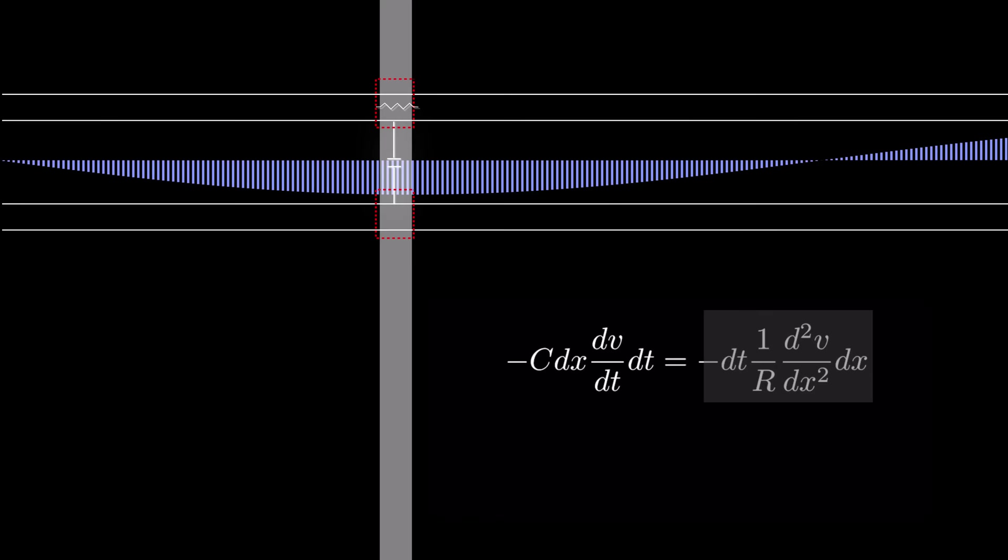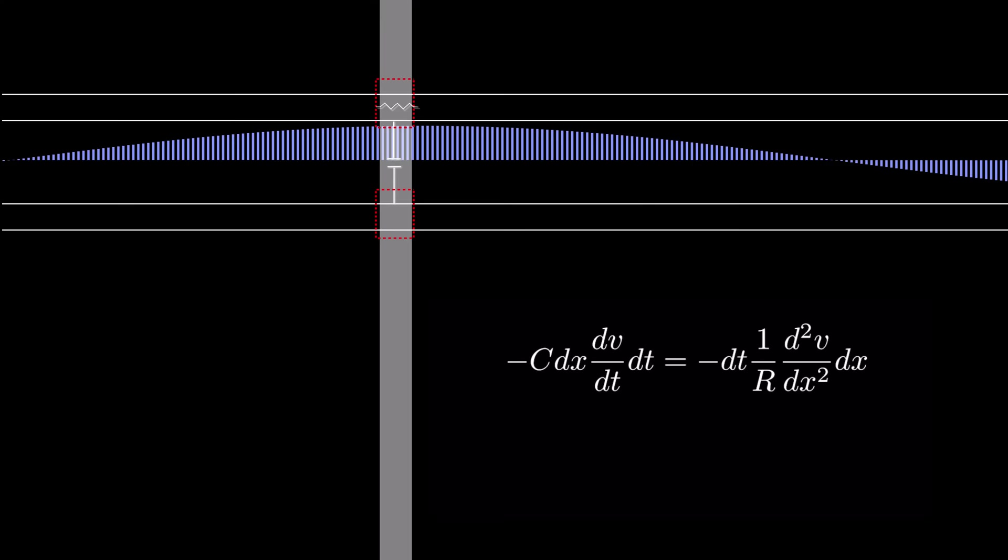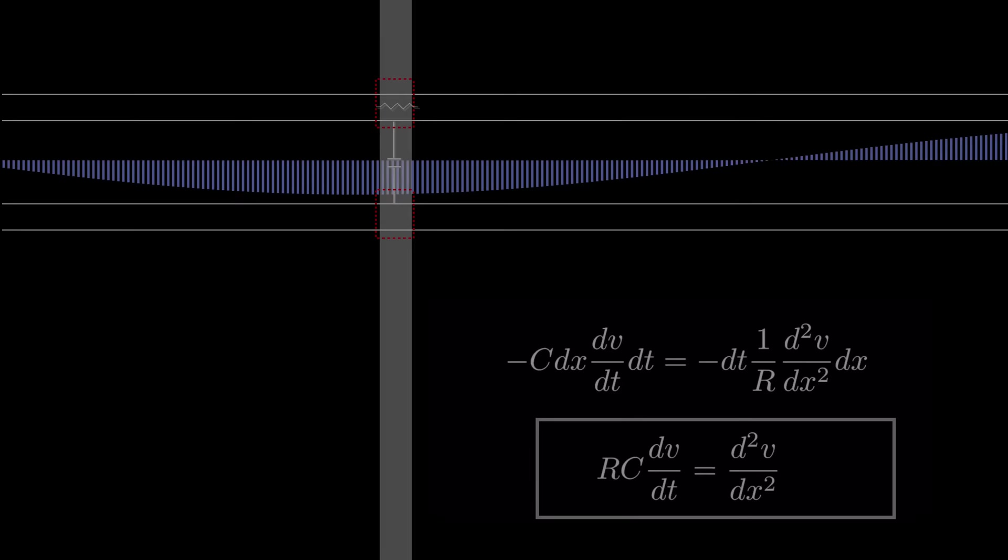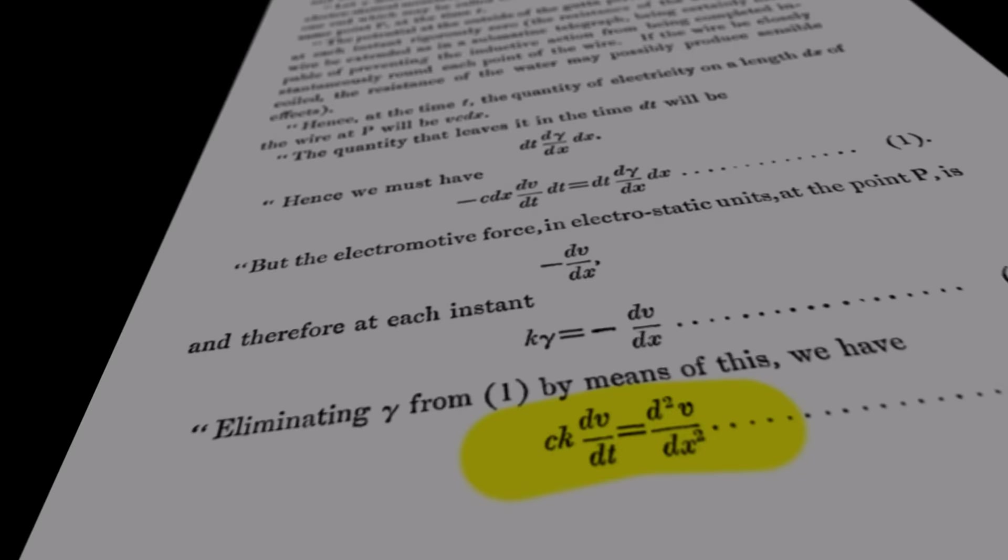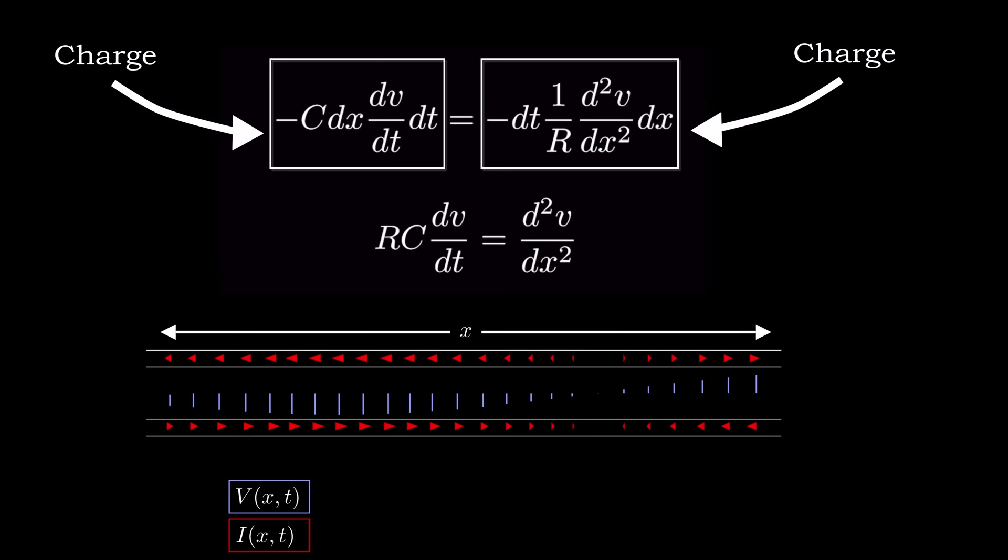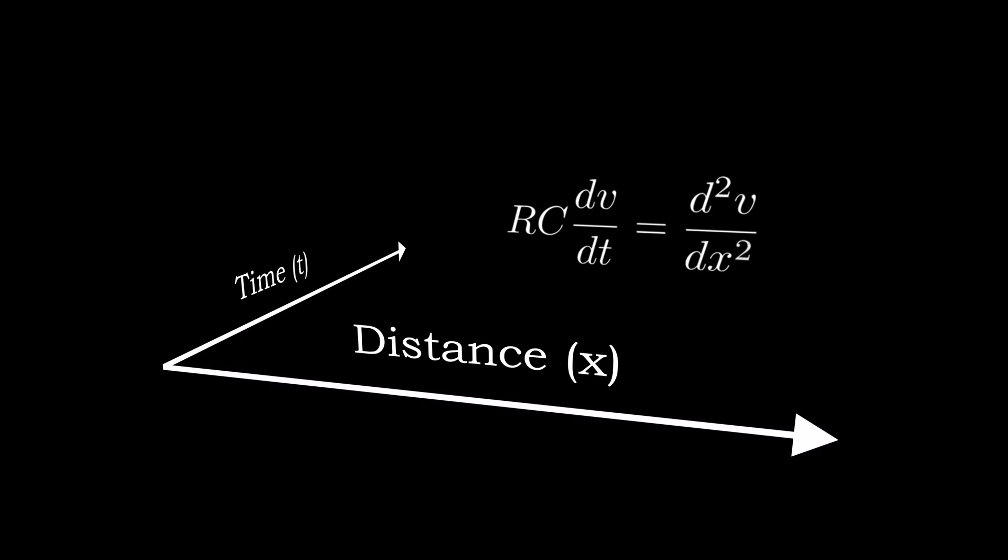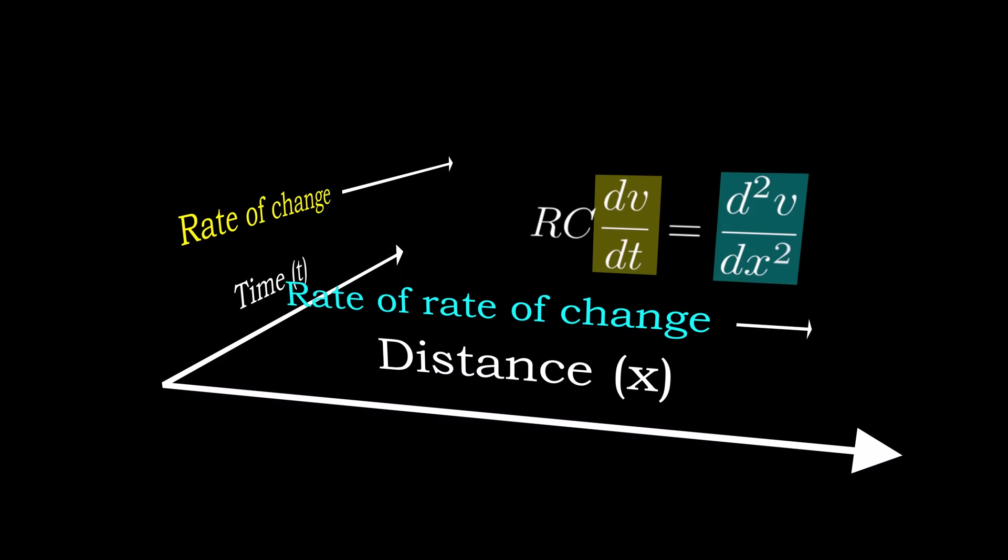This equation will tell you what the voltage on the line must be as a function of both time and position on the line. By equating the way that charge varies with voltage both as a function of time and as a function of position, Thomson now had an equation that represented a mathematical rule for what should always happen on a transmission line. This equation might look complicated, but really it's incredibly simple. The rate of change of voltage along the time axis is proportional to the rate of rate of change along the distance axis. The resistance and capacitance are the constant of proportionality between these two things.